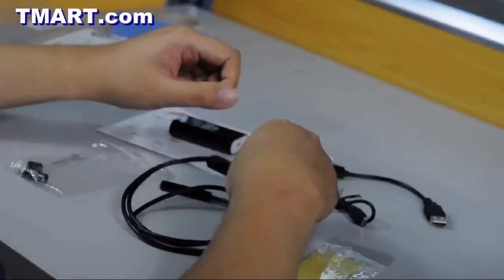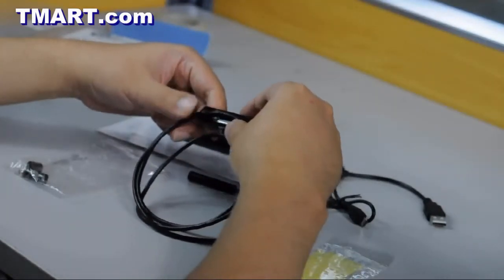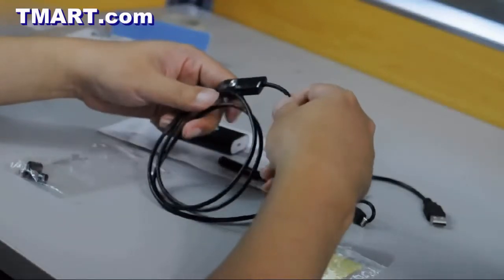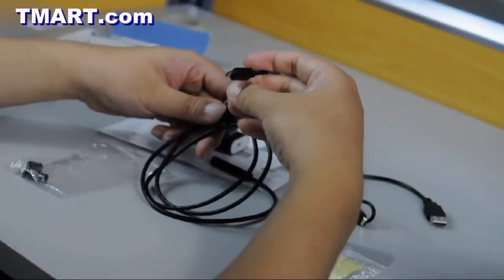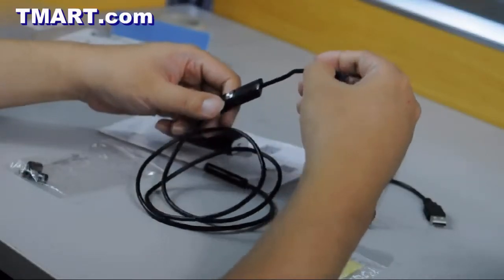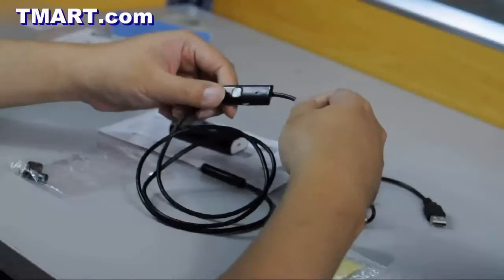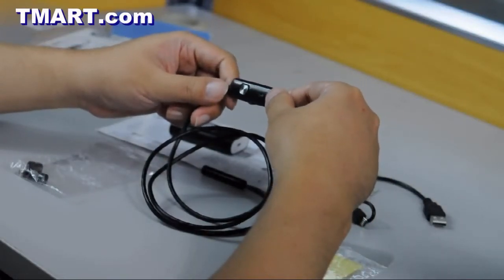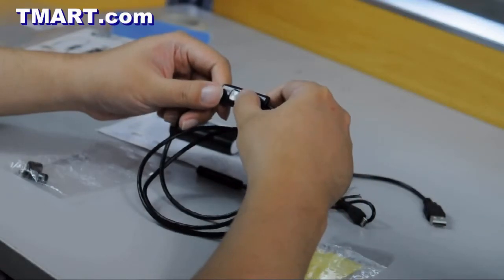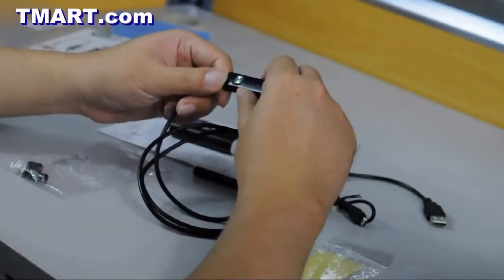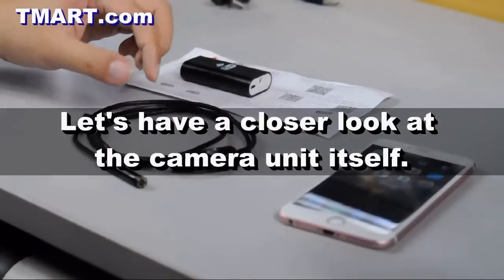And here is the camera unit itself with a 1 meter cable. As you can see on one end it's a micro USB connector. On the cable near the USB connector there is a remote control unit. It has a clicker button for taking pictures and a dial for adjusting LED brightness.